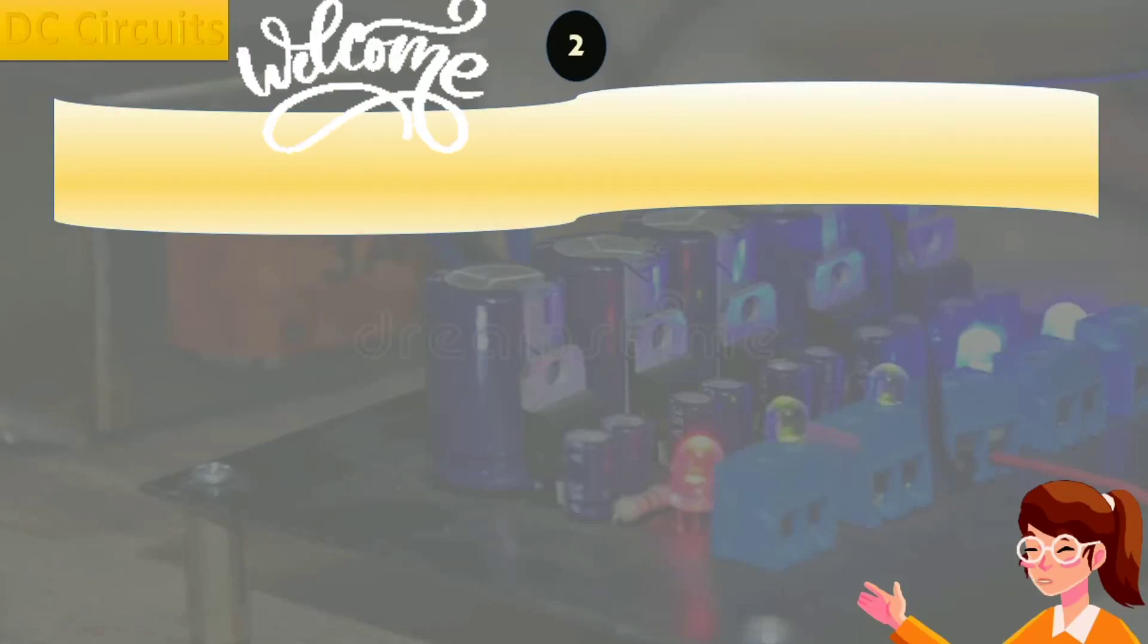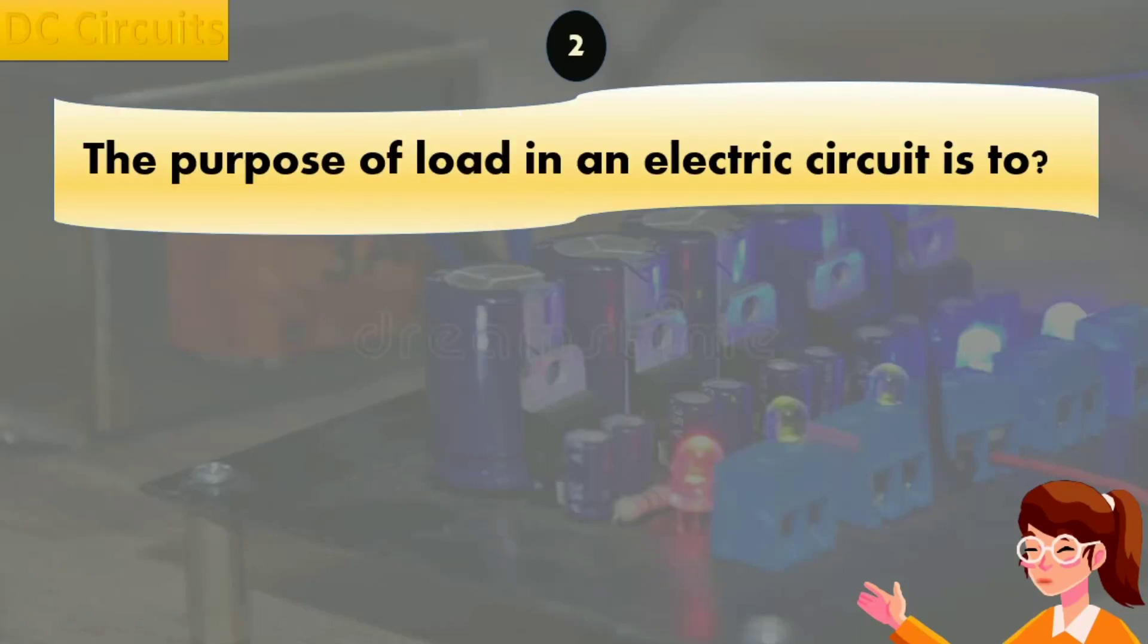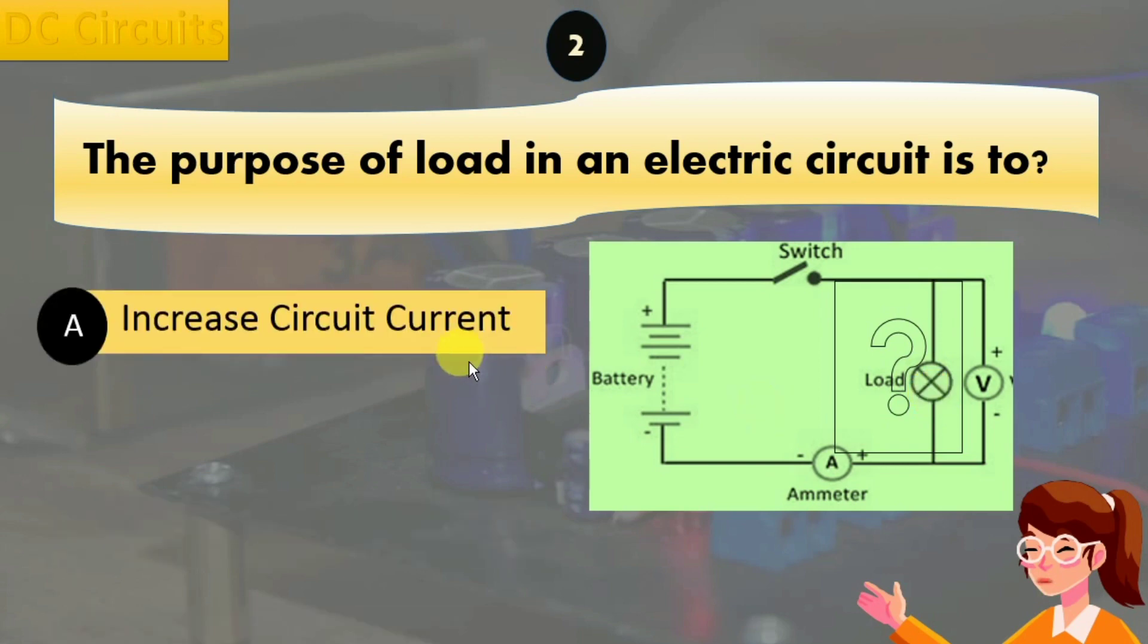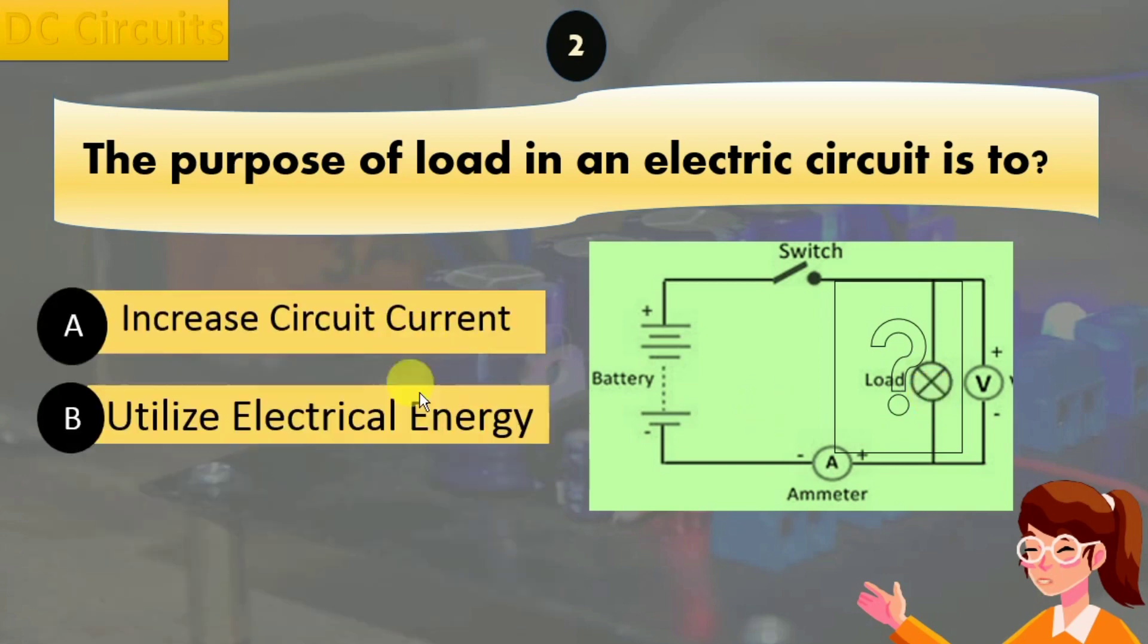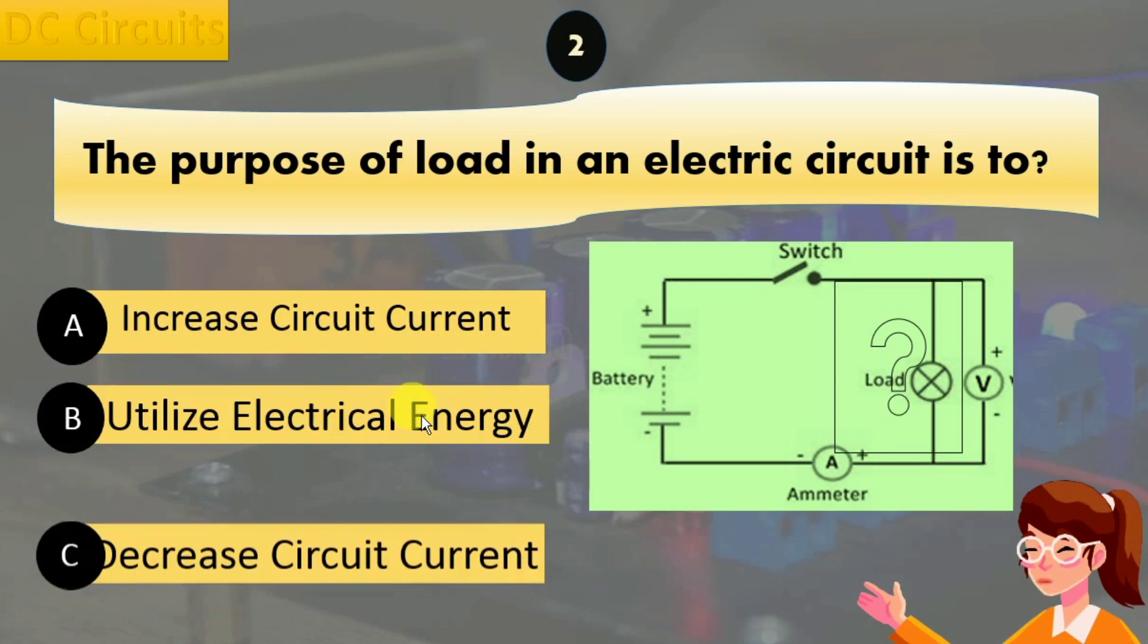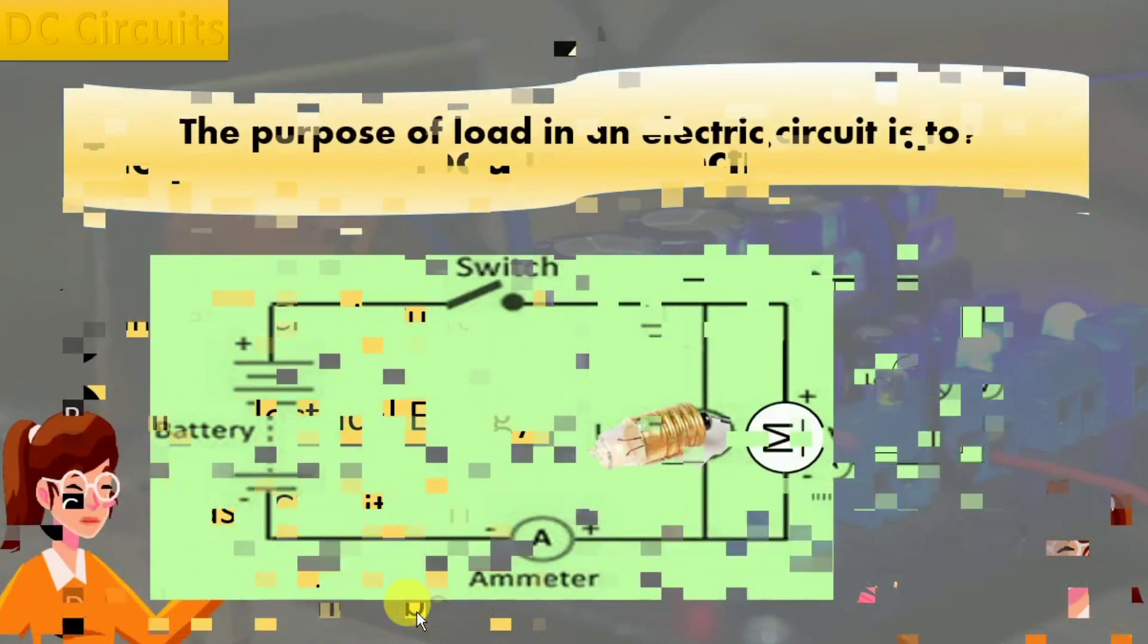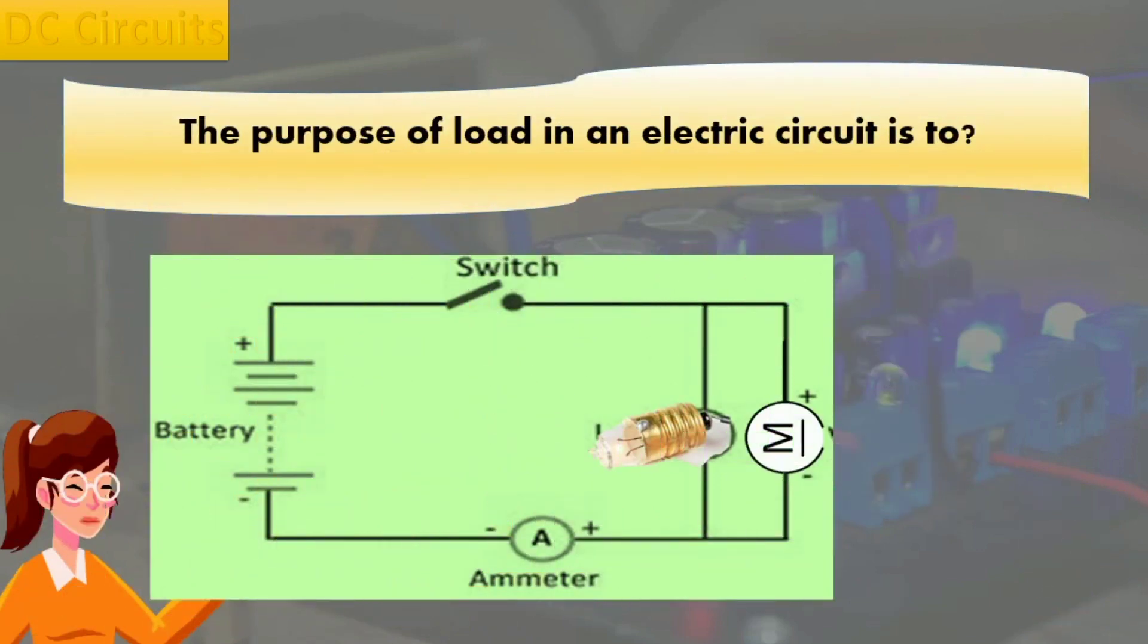Question number 2 says: the purpose of load in an electric circuit is to? Option A: increase circuit current. Option B: utilize electrical energy. Option C: decrease circuit current. And option D: none of the above. What use does a circuit load serve?